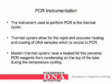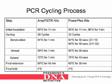The instrument used to perform PCR is a thermal cycler. Thermal cyclers allow for the rapid and accurate heating and cooling of DNA samples, which is crucial to PCR. Modern thermal cyclers have a heated lid, which prevents PCR reagents from condensing on the top of the tube during temperature cycling.